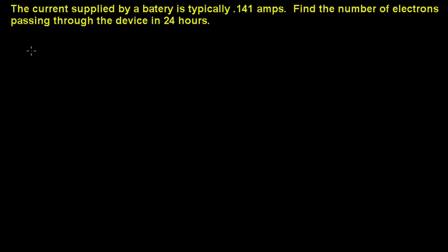First we're going to determine what equation we should use. The simplest one is going to be I average, or the average current, which we've determined is 0.141 amps, equals delta Q over delta T.